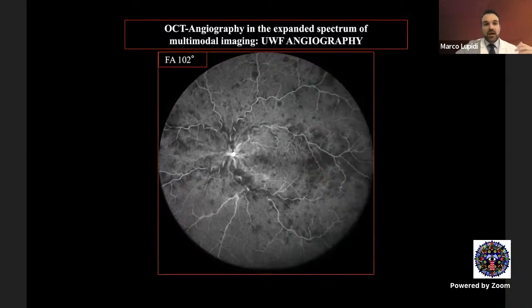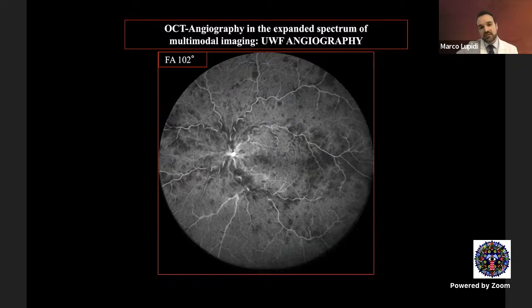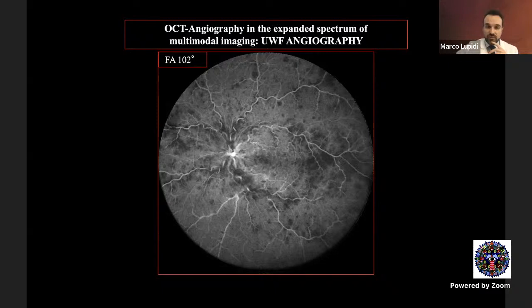Wide-field and ultra-wide-field angiography have been introduced in recent years. We started with 30-degree imaging, then moved to 55 or 50 degrees. Now there are devices that image the far periphery with a single shot — in this case 102 degrees, which can be tilted to obtain the temporal or nasal periphery. There is also the Optos device, able to image up to 200 degrees of the retina.